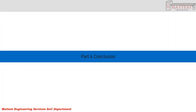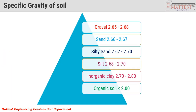Part 6 is the Conclusion. Typical specific gravity values for different soil types are: Gravel 2.65 to 2.68, Sand 2.66 to 2.67, Silty sand 2.67 to 2.70, Silt 2.68 to 2.70, Inorganic clay 2.70 to 2.80, and Organic soil less than 2.0.